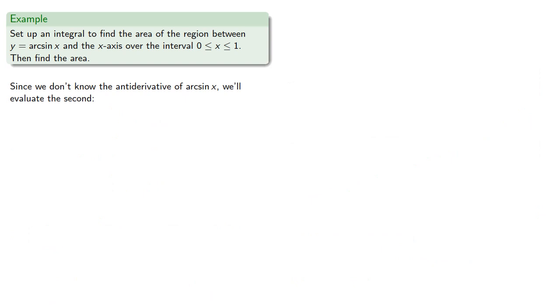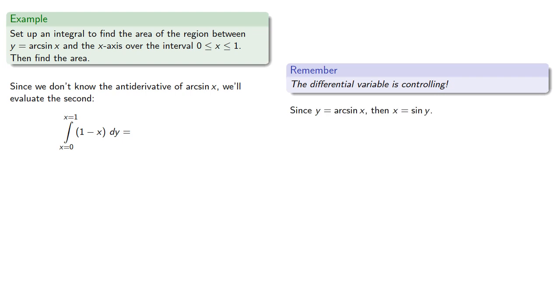Since we don't know the antiderivative of arcsin x, we'll evaluate the second integral. Remember, the differential variable is controlling. So if our differential variable is y, we have to rewrite everything in terms of y. Since y equals arcsin x, then x is sin y.